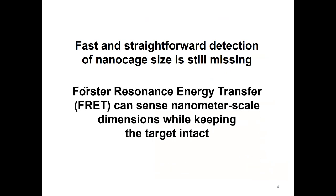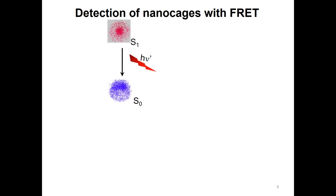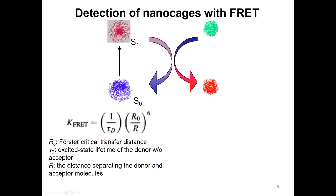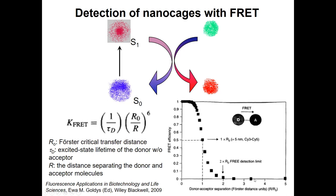There is — I think — Förster resonance energy transfer, FRET. Using FRET, we can sense nanometer-scale dimensions while keeping the target intact. If we do FRET, we need a donor. They can absorb a photon and go from ground state to excited state, possibly emitting another photon back to ground state. But before it comes back to ground state, if there is a nearby acceptor molecule, the energy will transfer from the donor to the acceptor. This energy transfer efficiency depends on distance — farther distance means lower efficiency, shorter distance means higher efficiency — so from the transfer efficiency we can know the distance between donor and acceptor.